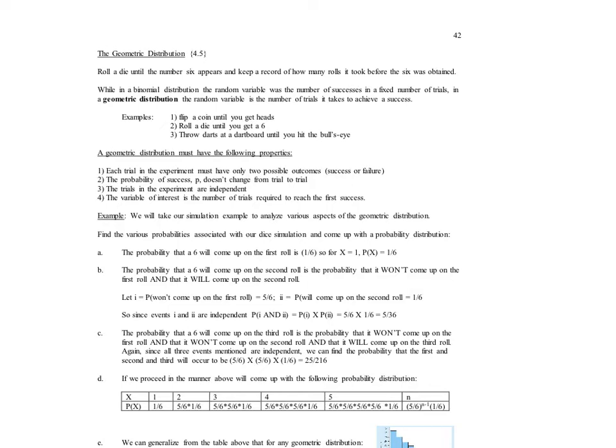The properties, these four conditions that go along with the geometric distribution are essentially the same as they would be for a binomial distribution. The exception is you don't know what the number of trials are, that's what you're looking for. In a binomial distribution, you knew what the number of trials were, you were just trying to determine the probability of getting a certain number of successes. In the geometric, you're looking for one success, you want to know how many trials it's going to take to get to that one success.